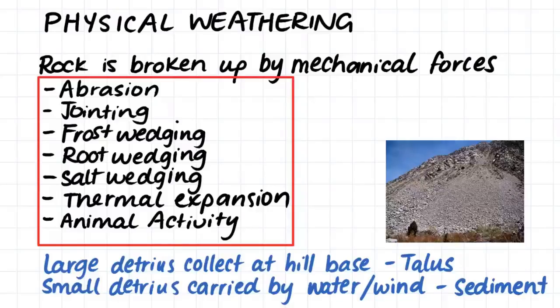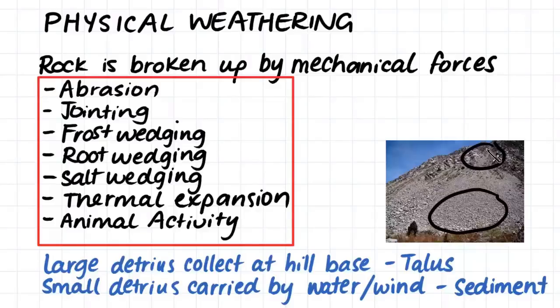Large detritus will collect at the bottom of a hill where it is broken off, and this is called talus. Here we can see talus at the bottom of this hill where weathering is taking place. Small detritus can actually be carried along by water or wind down streams or through the ocean, and this smaller detritus is often called sediment.